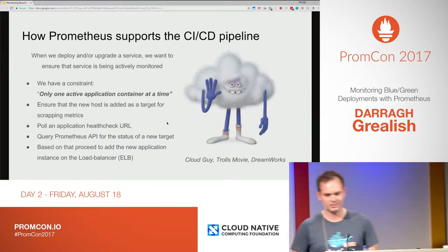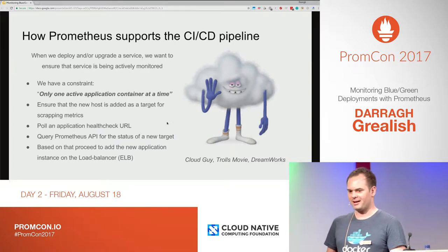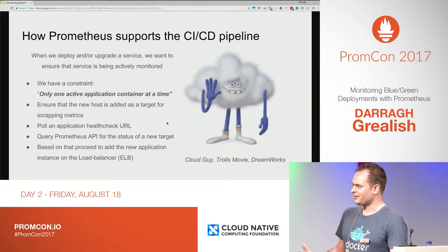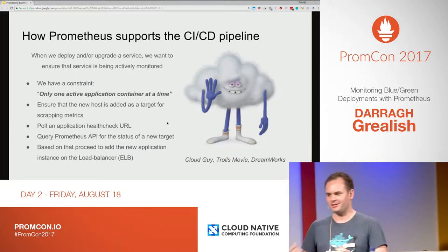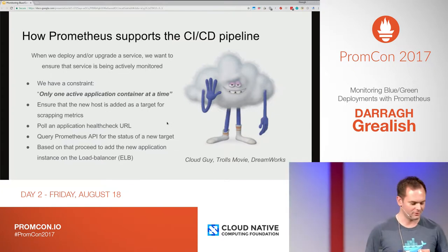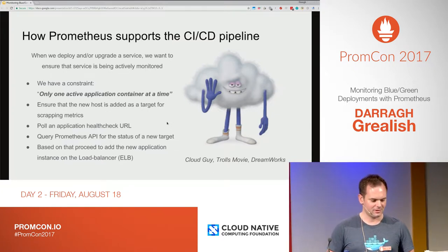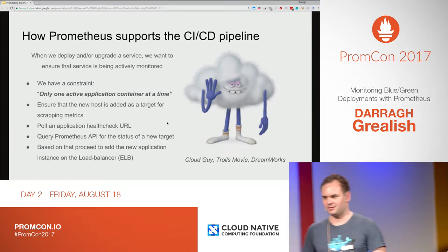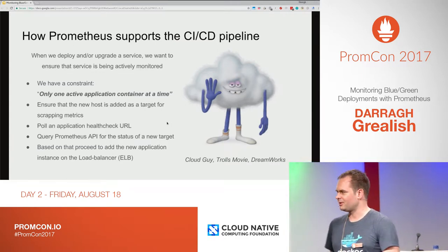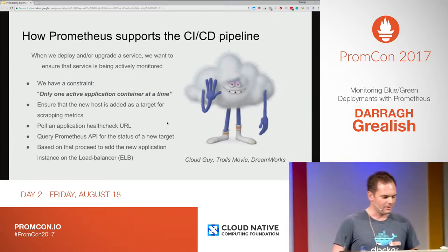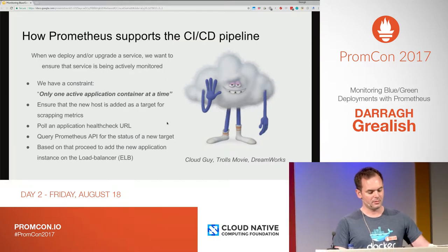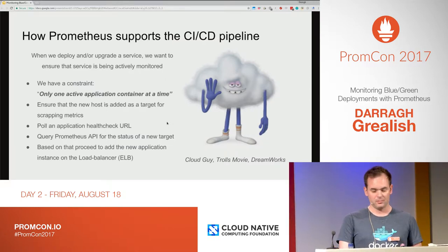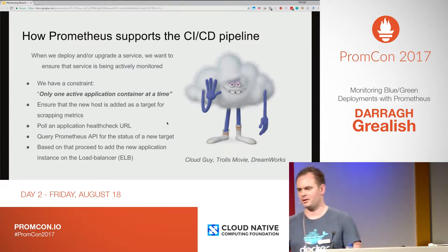I have a quick slide giving introduction to this. There were some constraints — it was a classical, quite monolithic application, so only one instance could run at a time, even though we're using it in AWS in the cloud with Docker. We also had to ensure that the host was added to Prometheus to actually be scraped for its node, and then we checked the application health URL query to the Prometheus API to see if the target was up.